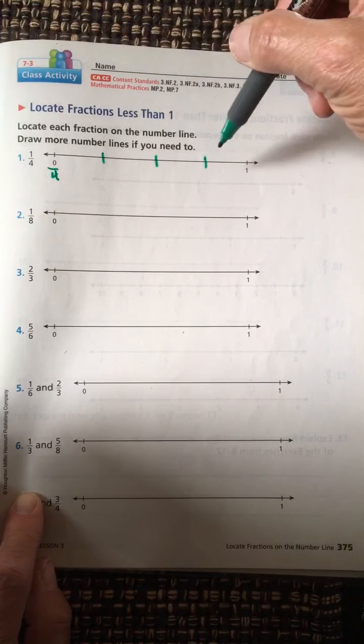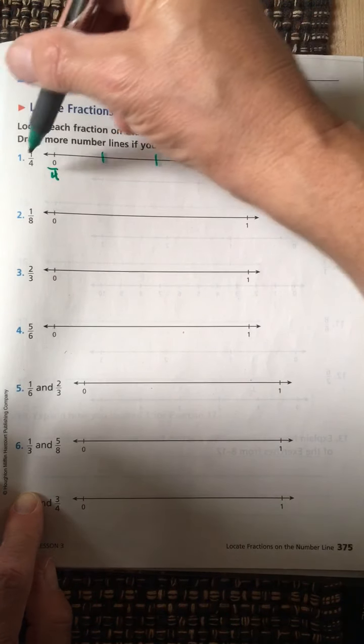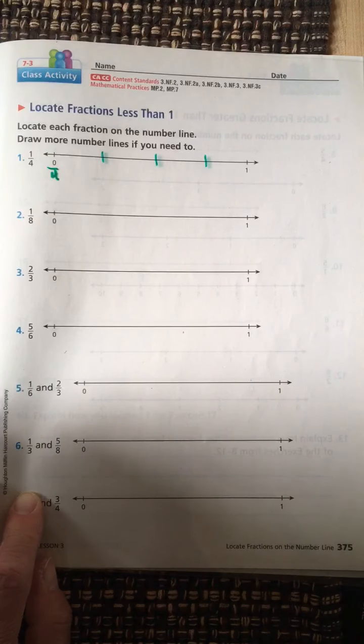Be sure to label all of your fractions. Zero fourths, one fourth, two fourths, three fourths, and four fourths. Then draw a bubble where one fourth is.